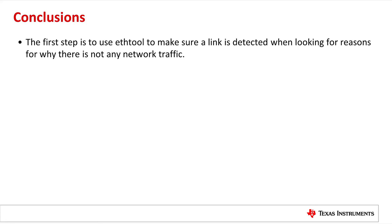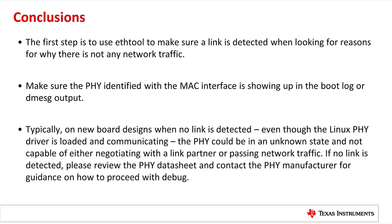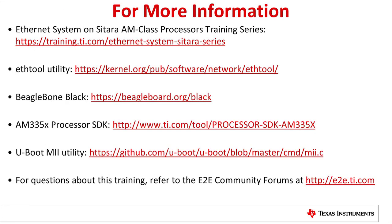In conclusions: the first step is to use Eth Tool to make sure a link is detected when looking for reasons why there is not any network traffic. On new boards, make sure the PHY identified with the MAC interface is showing up in the boot log or dmesg output. On new board designs, when no link is detected even though the Linux PHY driver is loading, the PHY could be in an unknown state and not capable of negotiating with a link partner. If no link is detected, please consider reviewing the PHY data sheet and contacting the PHY manufacturer for guidance. Also, make sure Ethernet connectors are firmly seated, the link partner is powered up and healthy, and consider replacing the cable as cables can go bad. Thank you for watching, and here are some additional links on training available from Texas Instruments.